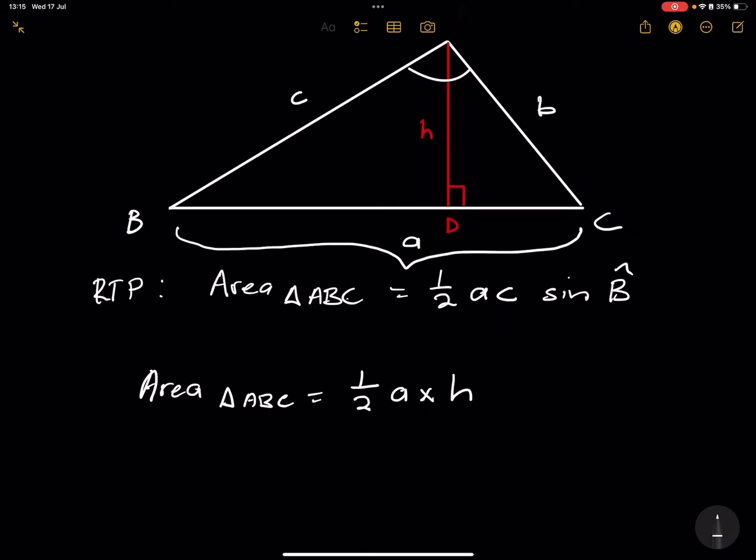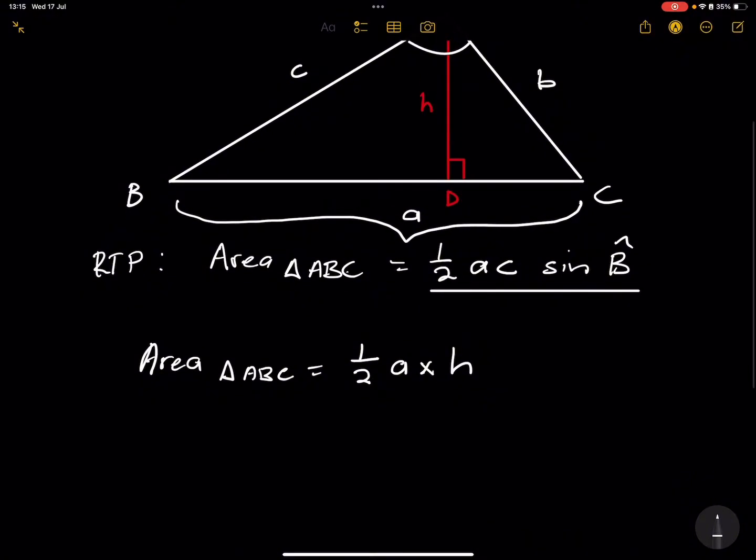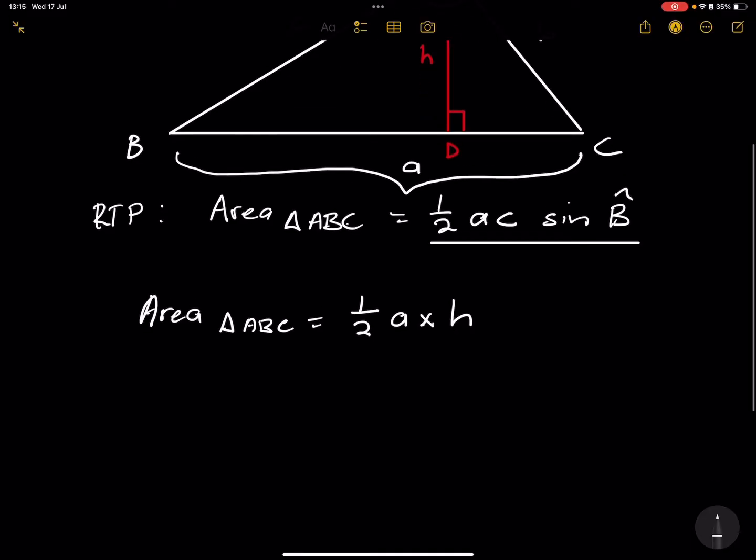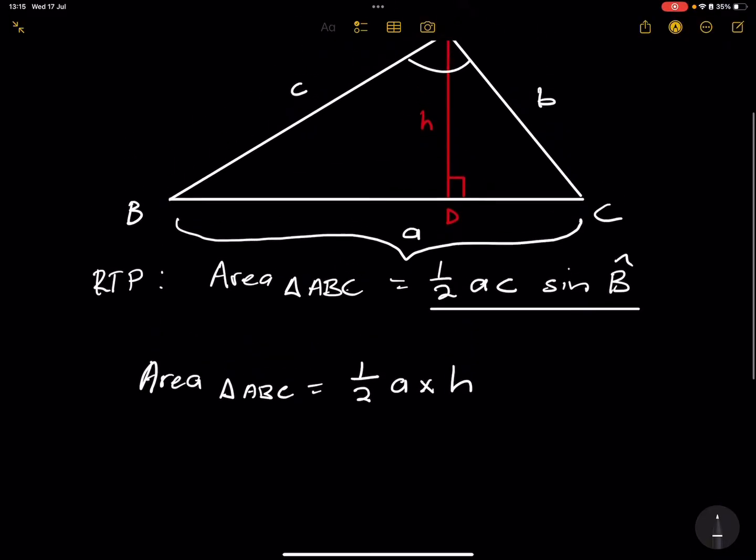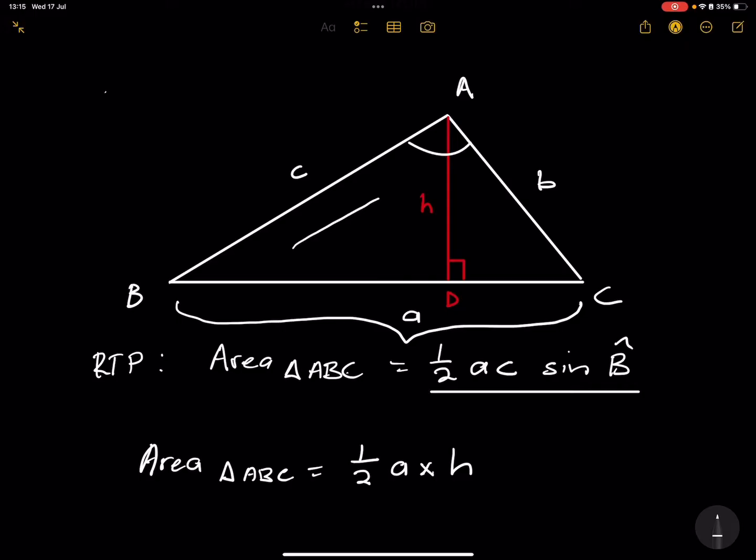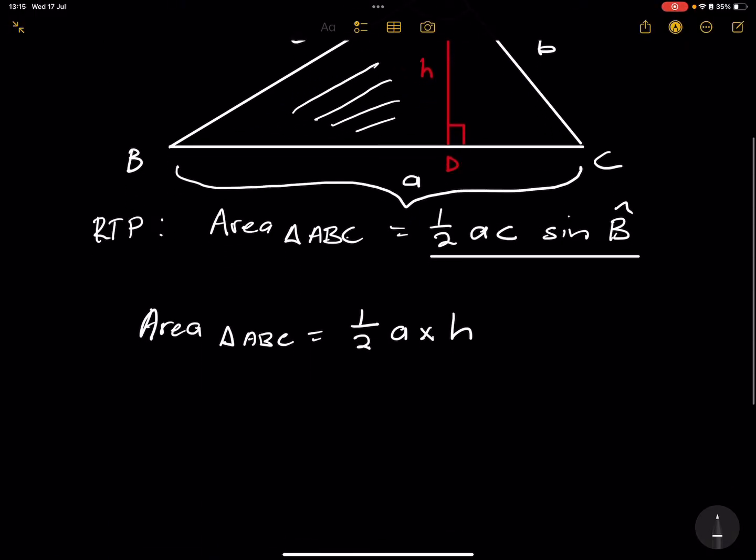But remember, in this case we want to express it according to the area rule. So now we need to find an expression that will give us the sine of B. So I'm going to go into triangle ABD and I'm going to say, well, in triangle ABD, I know that the sine of the angle...